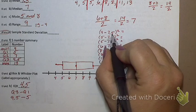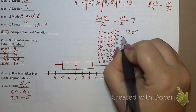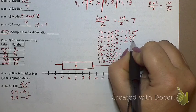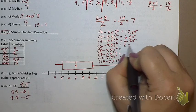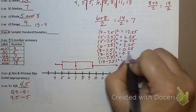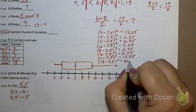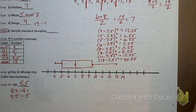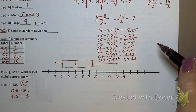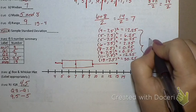4 minus 7.5, when I subtract that and I square the result, I get 12.25. This one gives me 6.25. This one's also 6.25. This one's 2.25. This one's 0.25, 0.25, 12.25, and 30.25. I went through that quickly. You can do the work on your calculator. What do I do once I have those subtracted and squared? Add them all up. When you add all those up, you get 70.